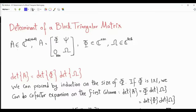This video is about block matrices. We have matrix A, which is an upper block triangular matrix. It is composed of these blocks: a square matrix φ of size n by n, a square matrix ω of size k by k, a general matrix ψ of size n by k, and a block of zeros of size k by n.